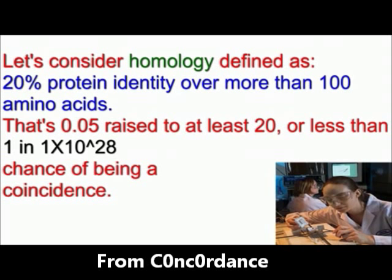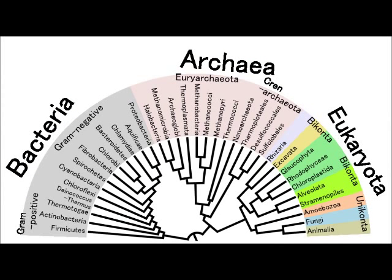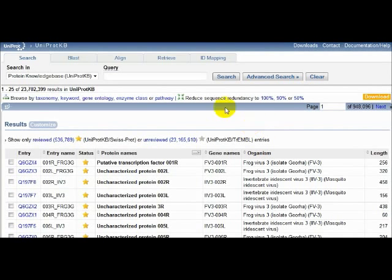Before going deeper, I'm curious why Concordance limits the organisms to animals and plants, given that these only represent a fraction of the total number of taxonomic groups. Having said that, I would like to introduce you to a protein named VIR1.